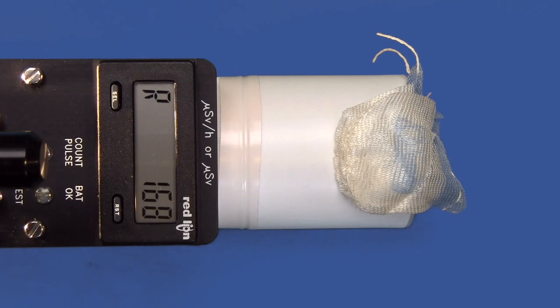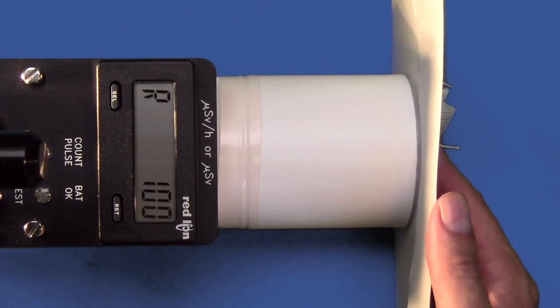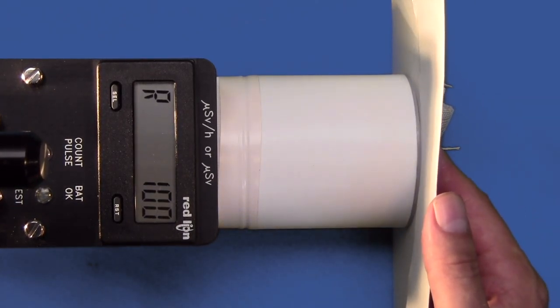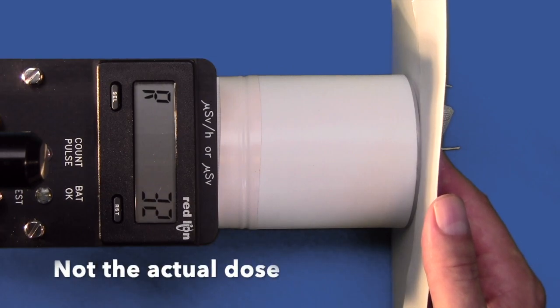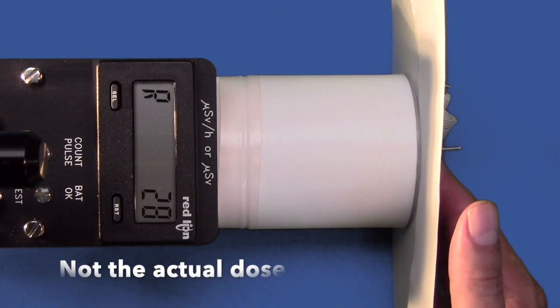To detect alpha, the source should be less than a half inch or 12 millimeters from the window, as alphas are stopped by more than 12 millimeters of air. A single piece of paper will stop the alphas to isolate beta emissions, yielding a reading of 20 to 30, which is not a quantification, only an indication of beta particles emitted.